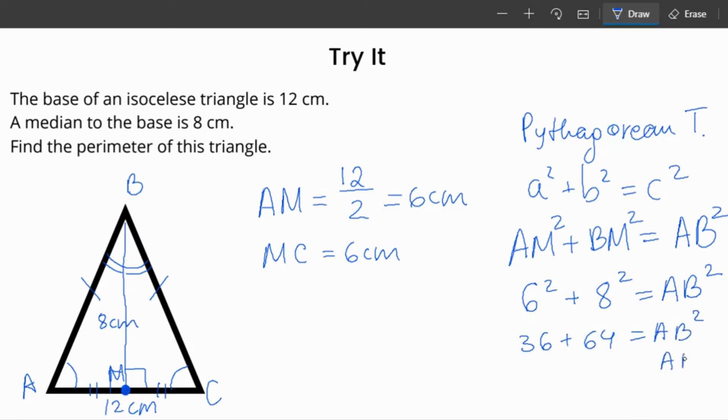AB squared equals 100. Square root both sides. AB equals 10. Let's write this down here.